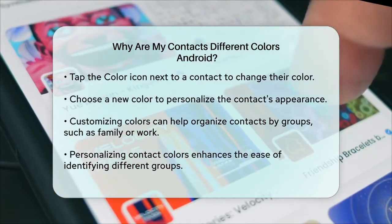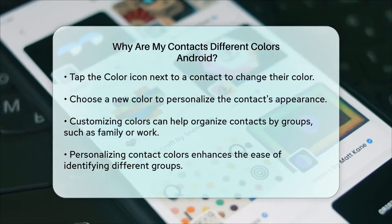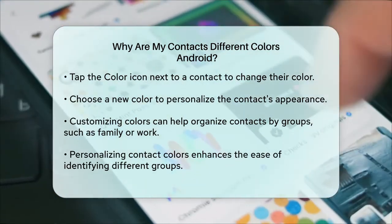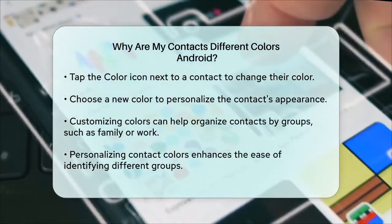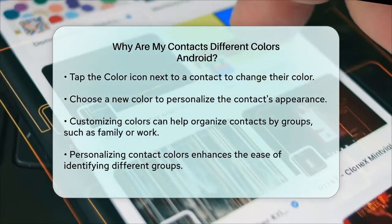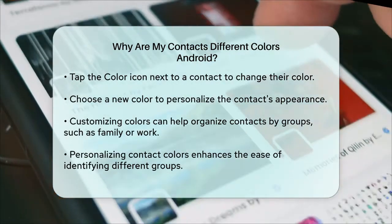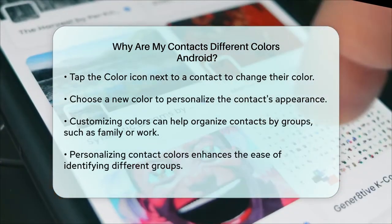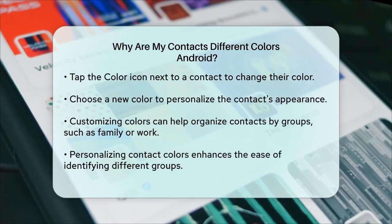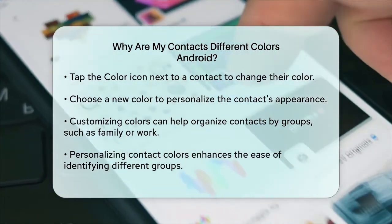In summary, the colors on your Android contacts are usually derived from the contact's photo, but you can change them to suit your preferences. By following these steps, you can personalize your contact list and make it easier to identify different groups of people.